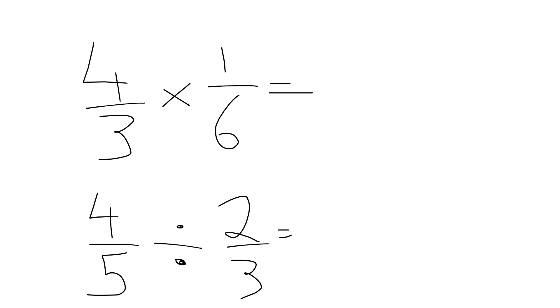So I've got to work out four thirds times one sixth. To multiply fractions, we multiply top by top and bottom by bottom, and then simplify where possible. So four times one is four, three times six would be 18. So I get four eighteenths.